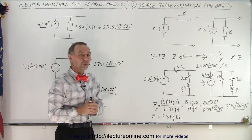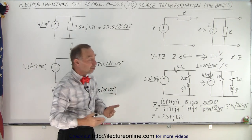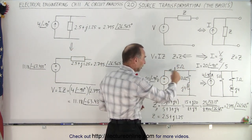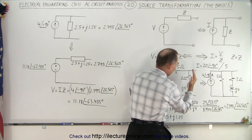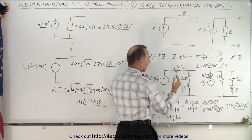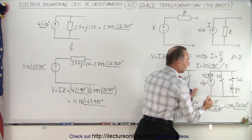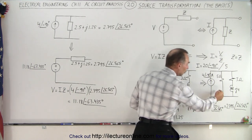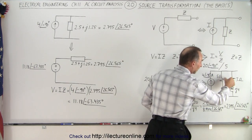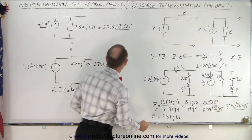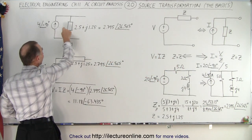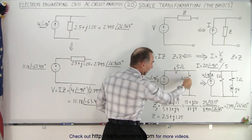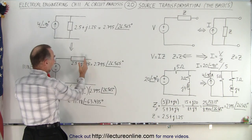You may wonder why we would want to do something like that. There are some advantages to doing so. Here's a simple example. Let's say we have a circuit that looks like this. Notice there are additional components to the circuit, but we're only going to look at this portion and convert it to the circuit that looks like this. If we do that, notice we can take these two impedances in parallel and turn them into a single impedance. Then we can convert it back, which means we take a circuit that looks more complicated like this and turn it into something that looks like this.